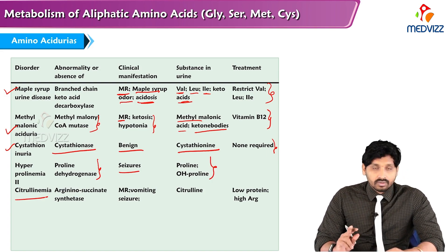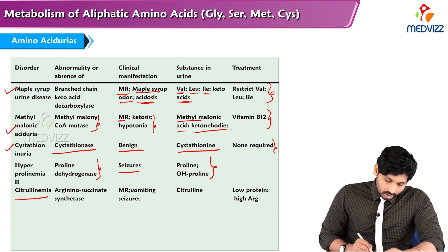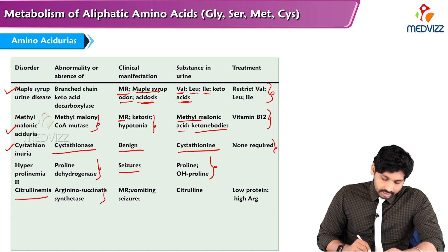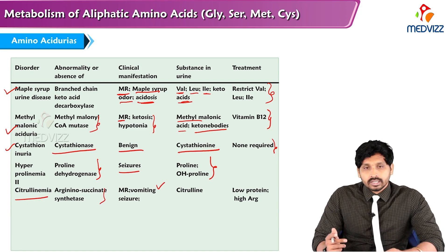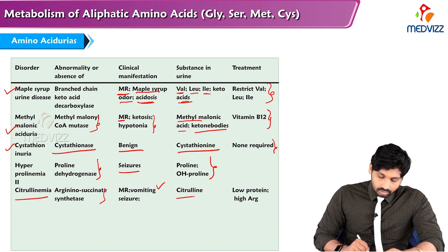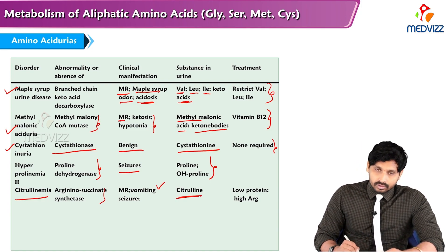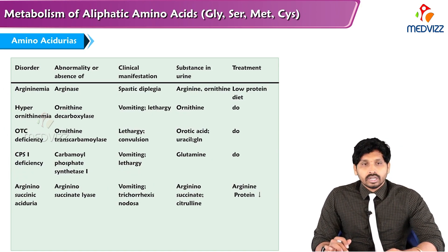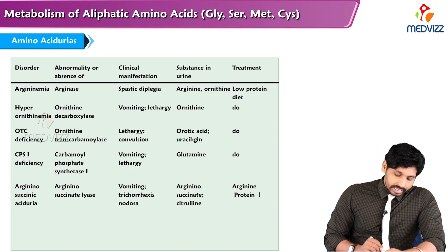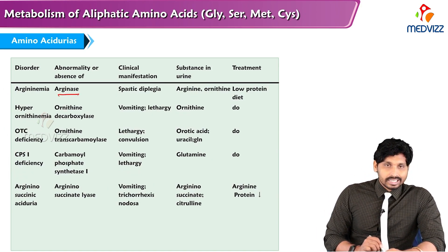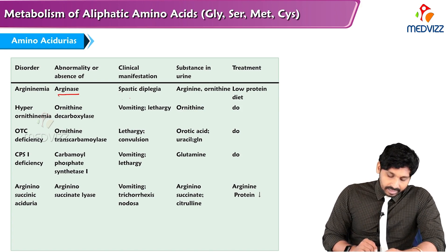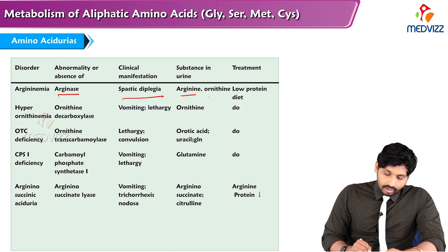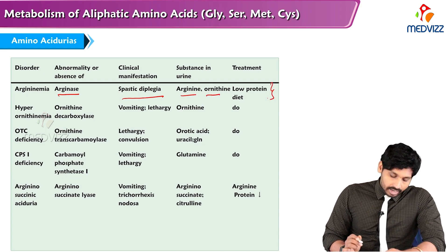Citrullinemia is a urea cycle disorder caused by argininosuccinate synthase enzyme deficiency, presenting with mental retardation, vomiting, and seizures. The excreted product in the urine is citrulline. Treatment involves a low protein diet rich in arginine. Argininemia is also a urea cycle disorder due to arginase enzyme deficiency, causing spastic diplegia. Arginine and ornithine appear in the urine, and treatment is a low protein diet.